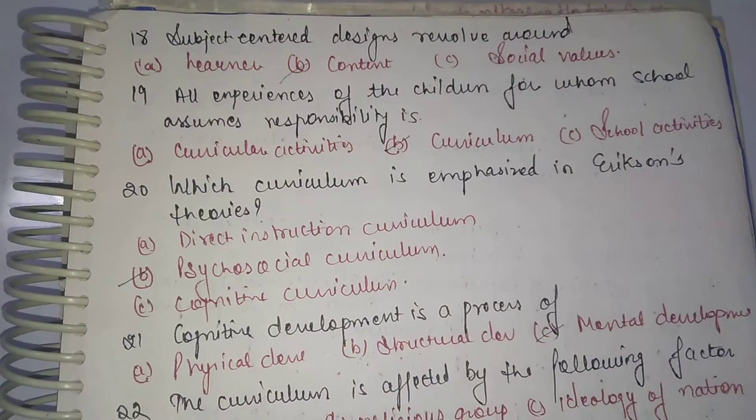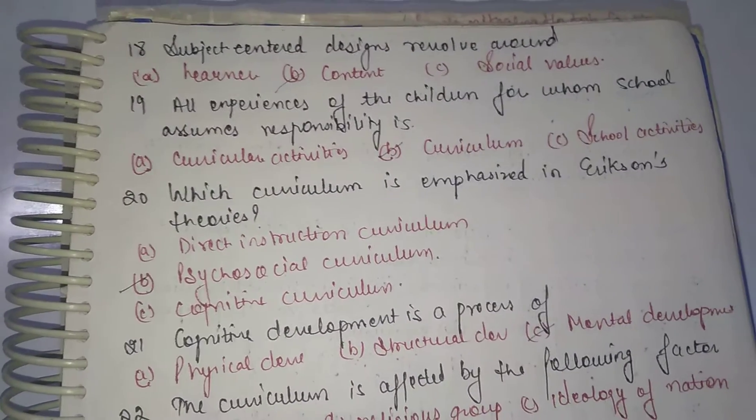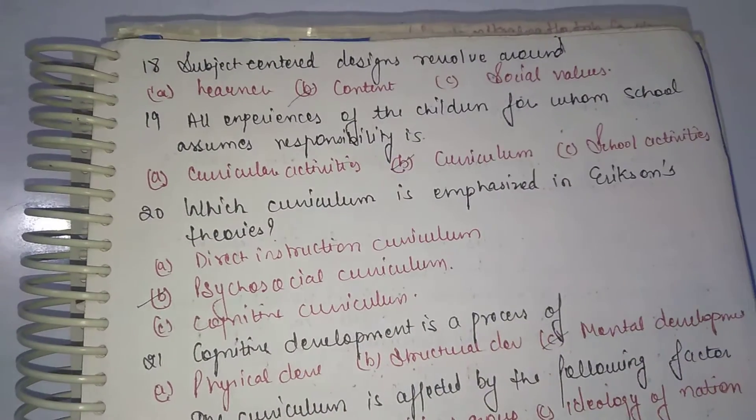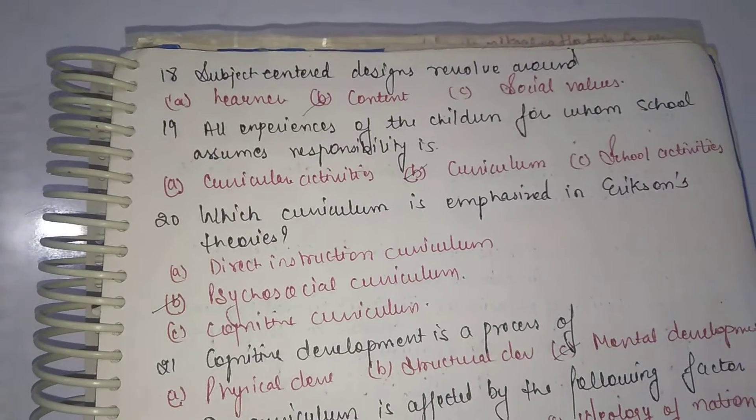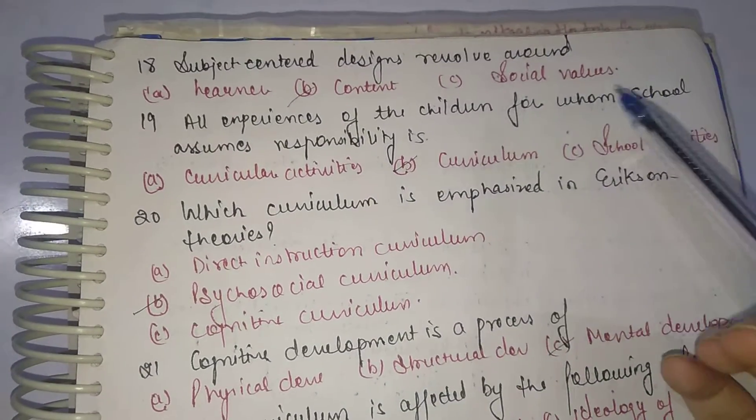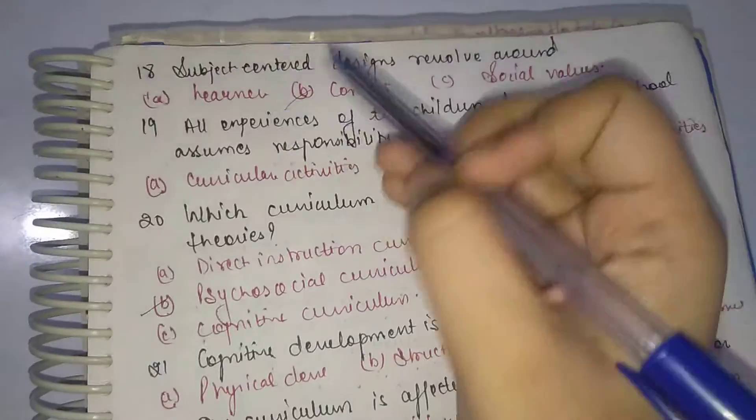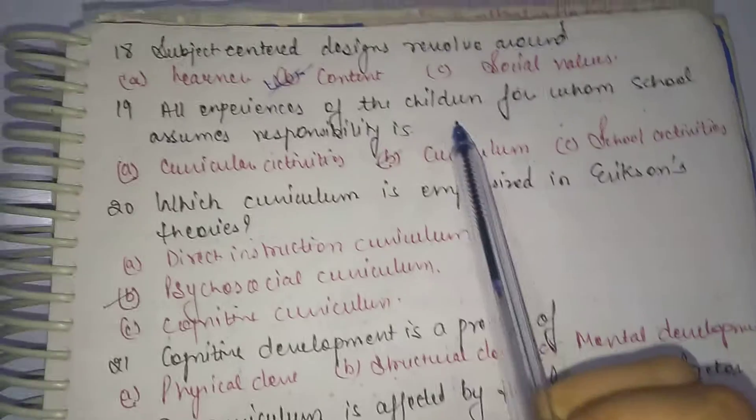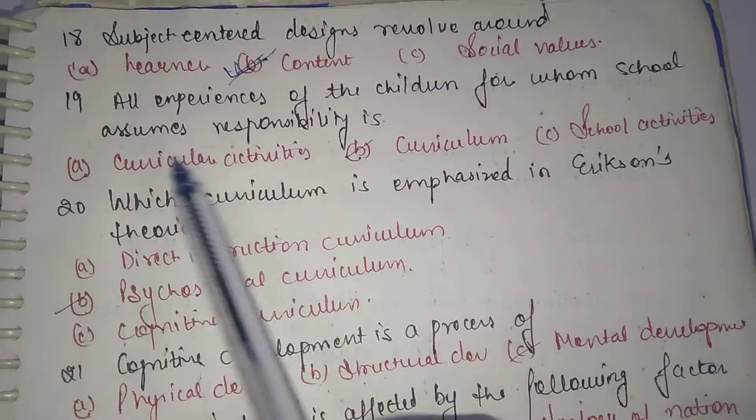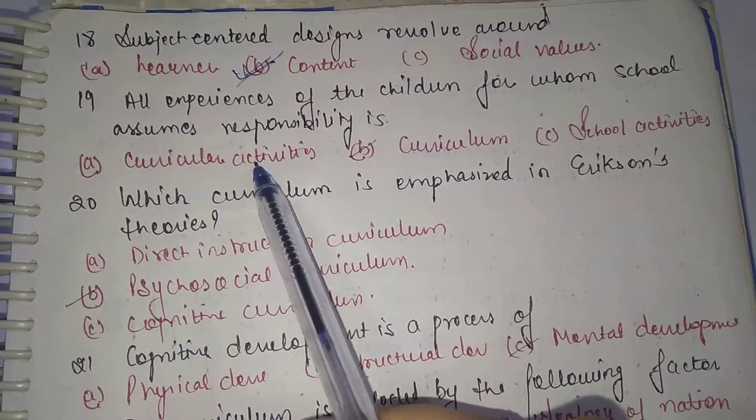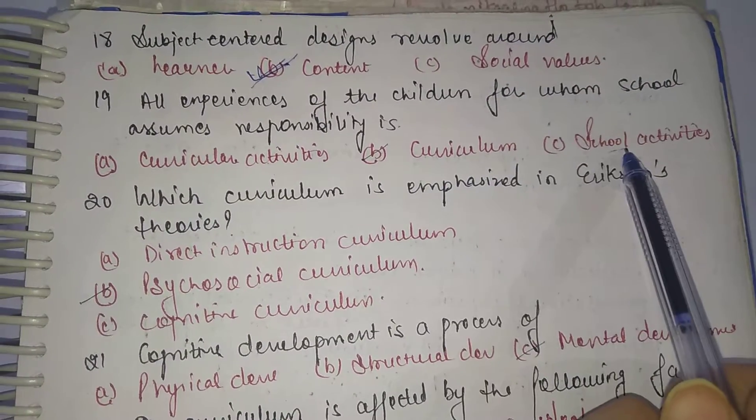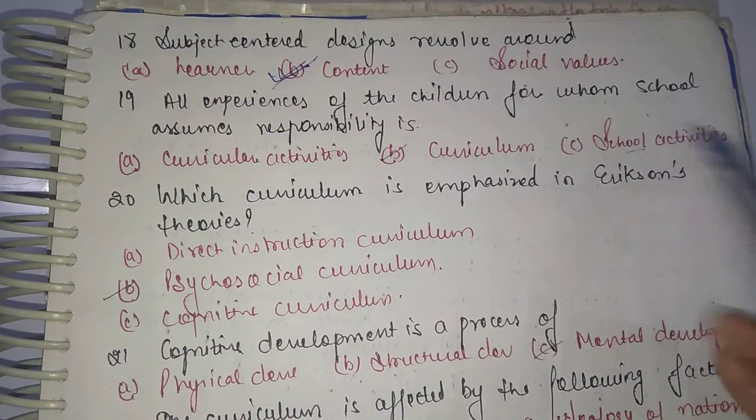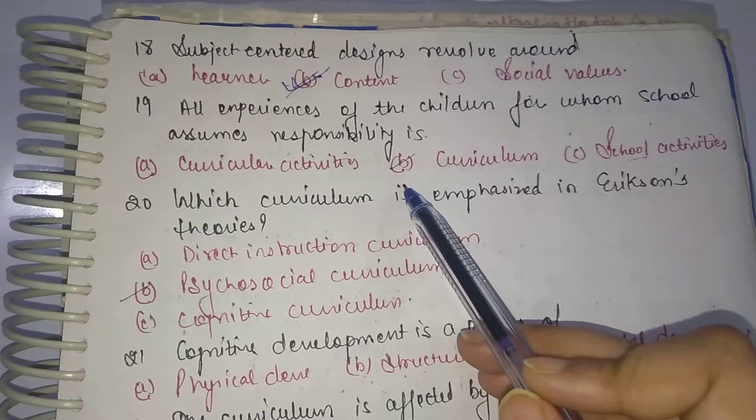The next question is: Subject-centered design revolves around what? Subject-centered design will basically revolve around content. The next is: All experiences of the children for whom school assumes responsibility is curricular activities, curriculum or school activities. In the curriculum everything will come whether it is scholastic or co-scholastic.